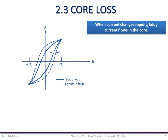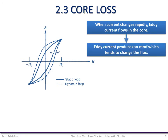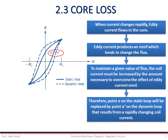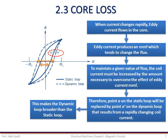When current changes rapidly, eddy current flows in the core. This eddy current produces an MMF which tends to change the flux. To maintain a given value of the flux, the coil current must be increased by the amount necessary to overcome the effect of eddy current MMF. Therefore, point A on the static loop will be replaced by point A' on the dynamic loop that results from rapidly changing coil current. This makes the dynamic loop broader than the static loop. Since the hysteresis loss is proportional to the area of the hysteresis loop, the dynamic loop will exhibit more core loss than the static loop.